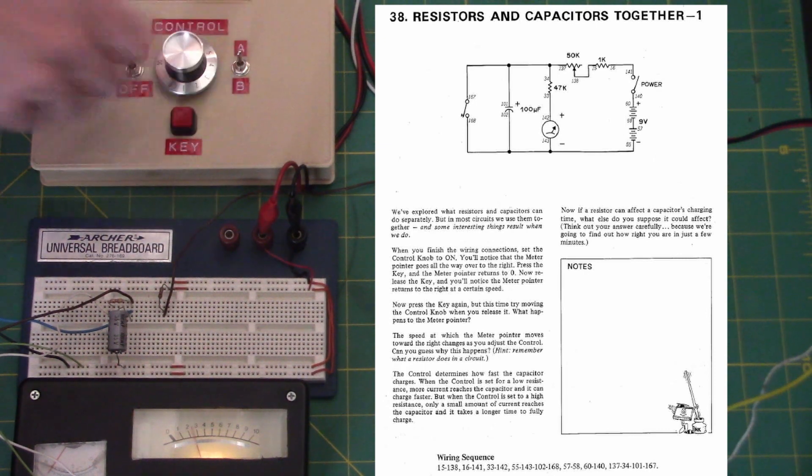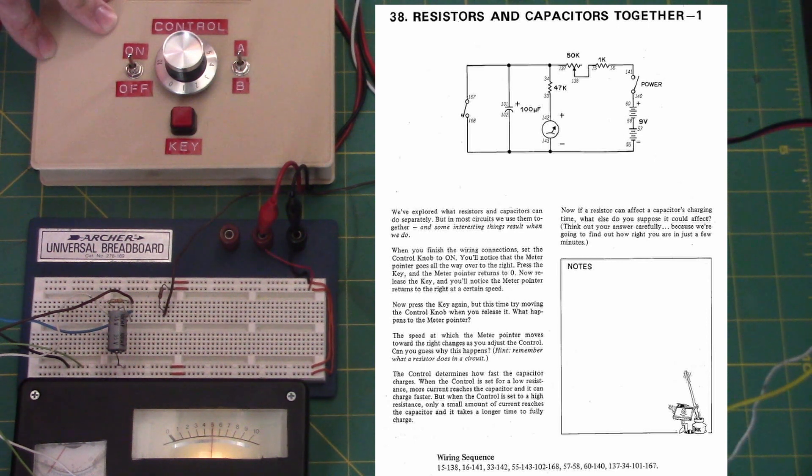Remember what a resistor does in a circuit. The control determines how fast the capacitor charges. When the control is set for low resistance, more current reaches the capacitor and it can charge faster.